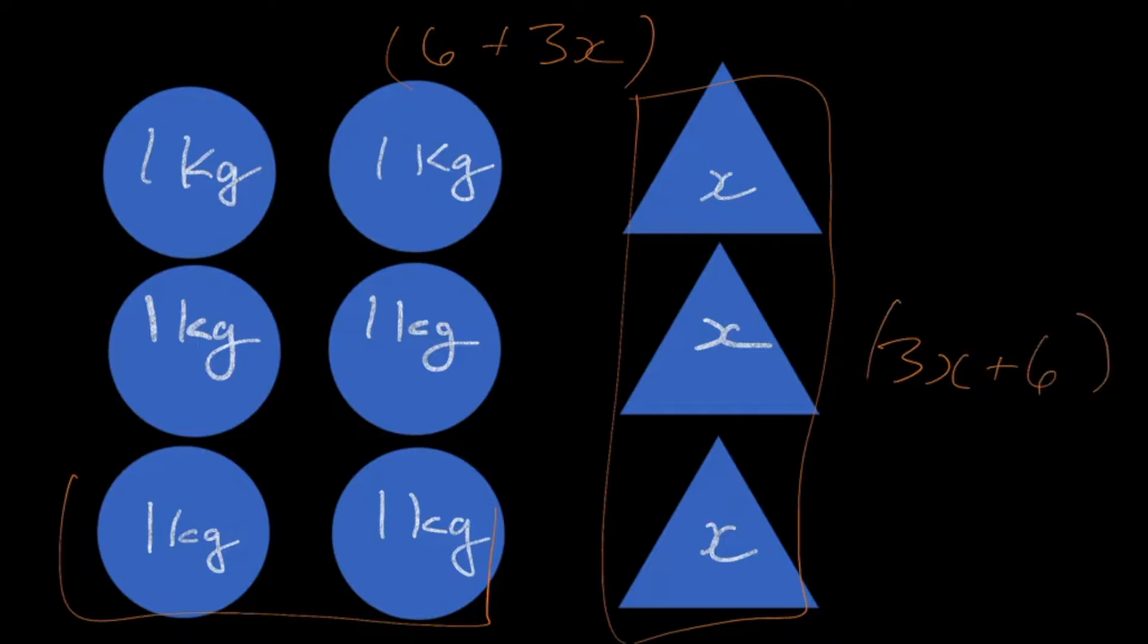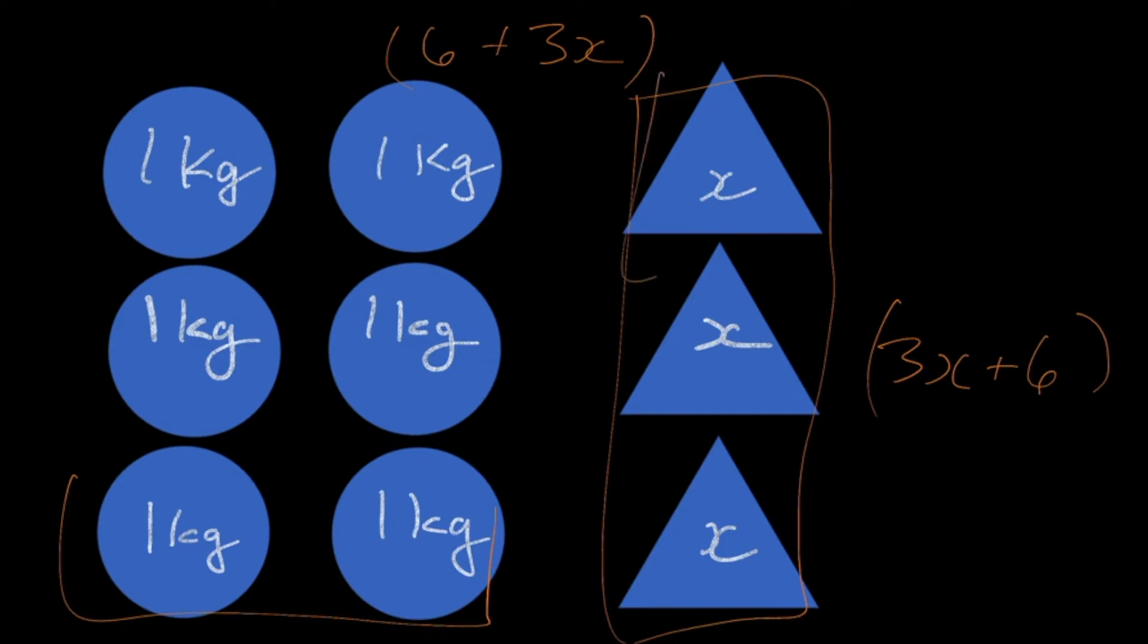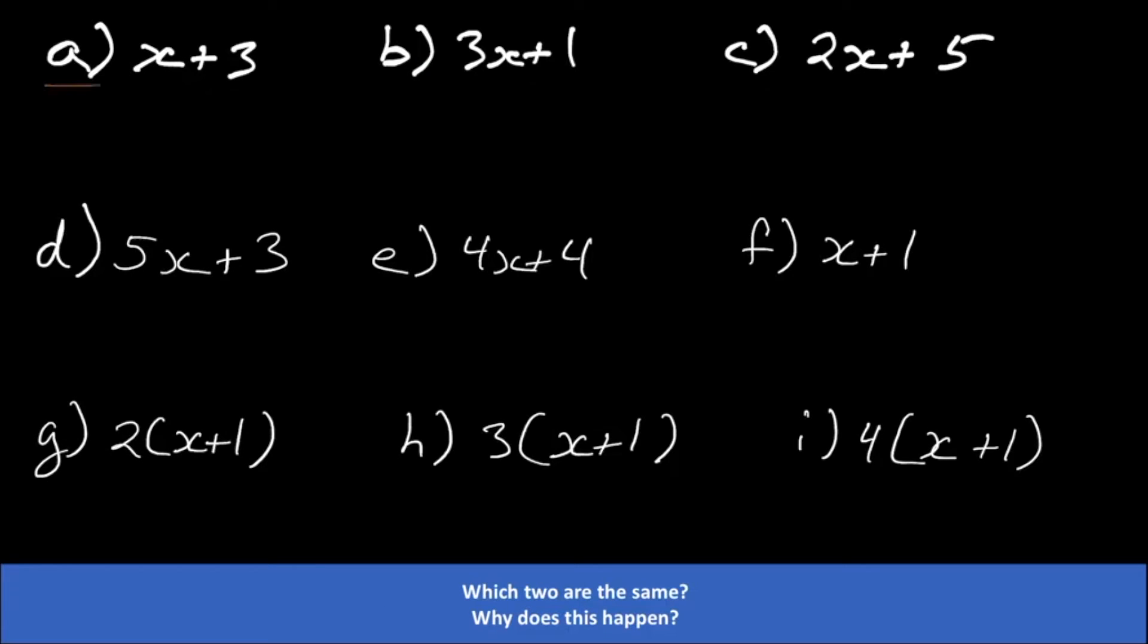Now I can write the expression this way, or I can also write it 3x plus 6. It doesn't matter which number comes first. So what I would like you to do is, using this format with the x's being the triangles and the circles representing how much we're adding, I would like you to draw triangles and circles for these expressions. For example, here is 4x: my one triangle and then I have three circles. And then I'd like you to do up to here for me and then stop and come back.